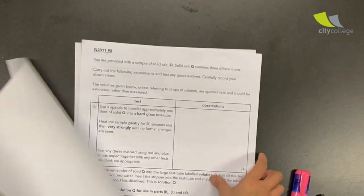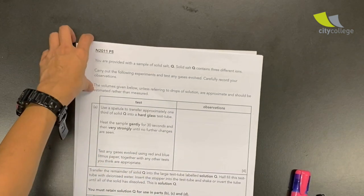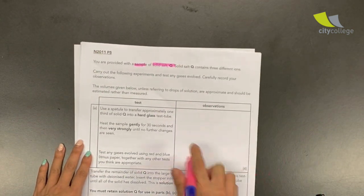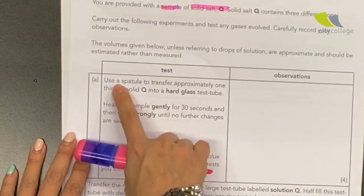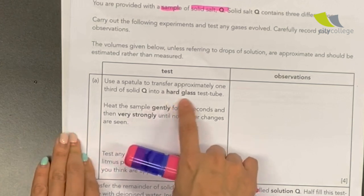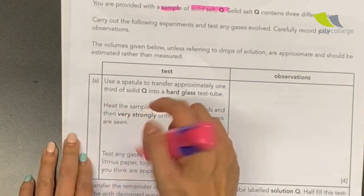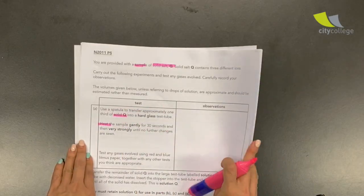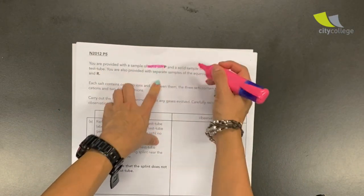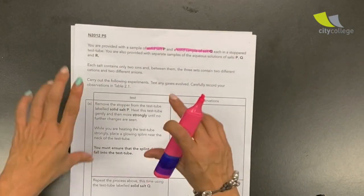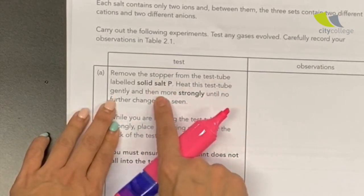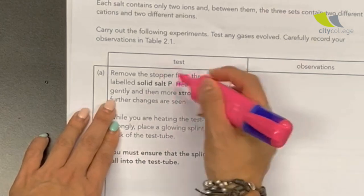In 2011, you are given a sample solid cube. Same thing over here, they say use a spatula to transfer approximately one-third of the solid cube into a high glass test tube. Heat the sample, heating, heat this test tube gently and then more strongly. Heating solid again.